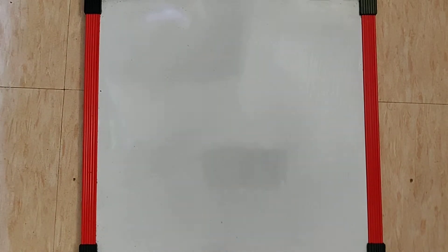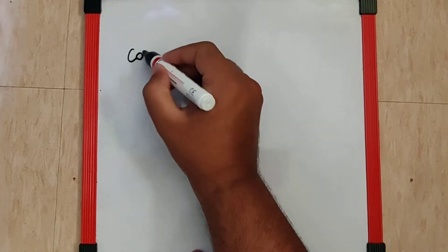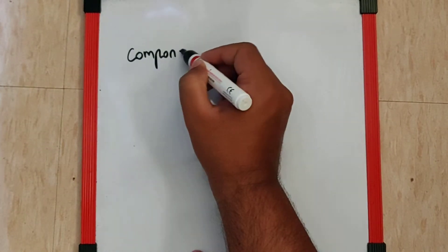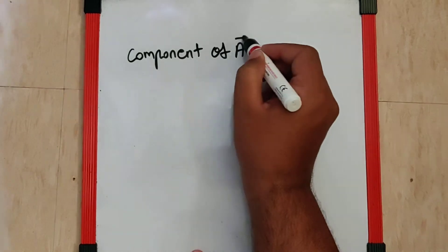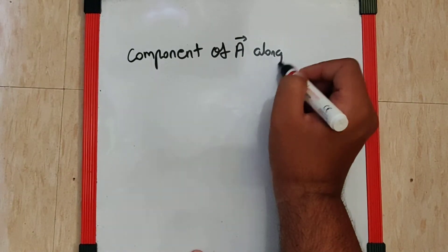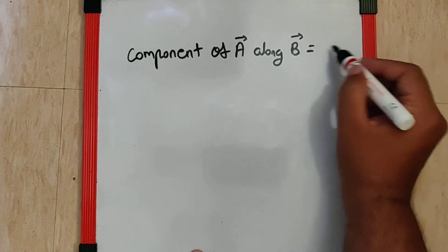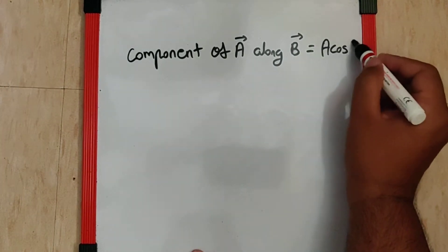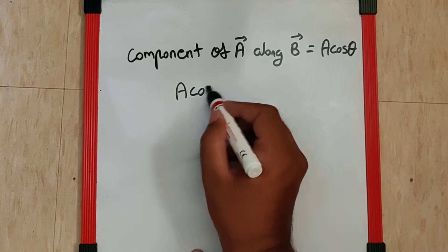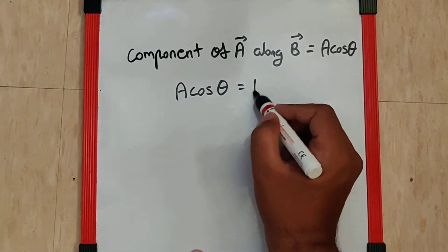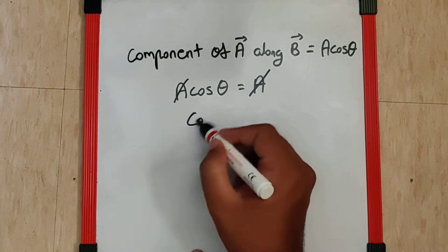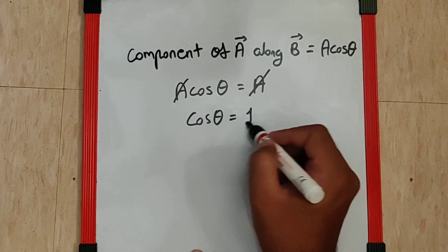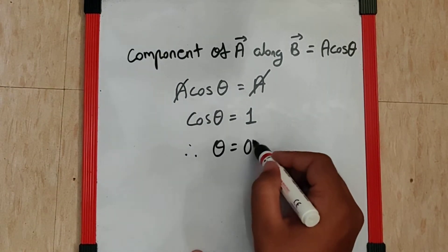The next question says: if the component of one vector A along another vector B is equal to A, then the two mentioned vectors are... The component of A along B is equal to A cosθ. They say A cosθ is equal to A, which means A gets cancelled and you get cosθ as 1. That definitely means θ is 0 degrees.